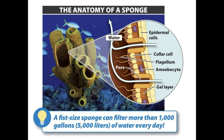Although sponges lack true tissues, they have different cell types. These include epidermal cells that cover the outside of the sponge, collar cells — also known as choanocytes — and amoebocytes, which are located as individual cells between the epidermal cells and the collar cells. The collar cells have cilia and flagella, and as water enters the pores of the sponge, the beating of the flagella creates a current that carries water upward and out through the opening at the top. As water passes by these cells, they absorb dissolved microorganisms through phagocytosis. The amoebocytes absorb and transport food to other cells of the sponge. The region between the epidermal and collar cells contains a gel with spicules that stiffen the body of the sponge.